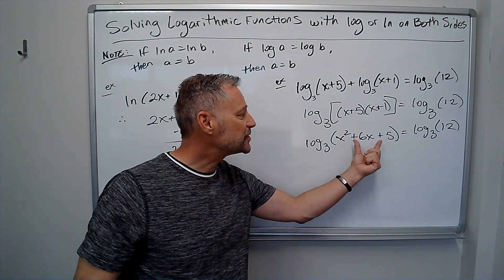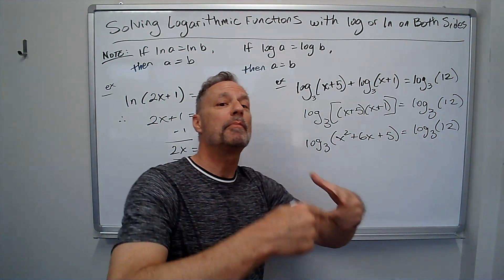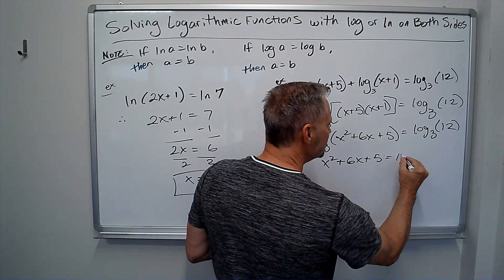Again, since I have log base 3 of this equals log base 3 of that, this has to equal that. So by property, x squared plus 6x plus 5 has to equal 12.